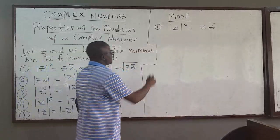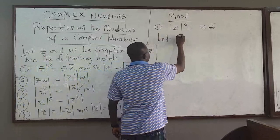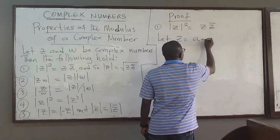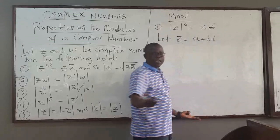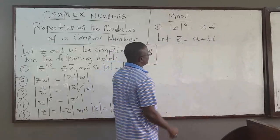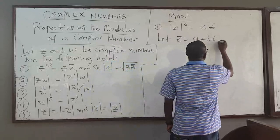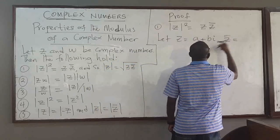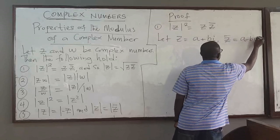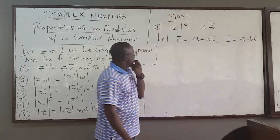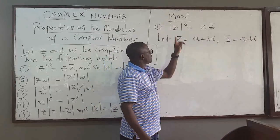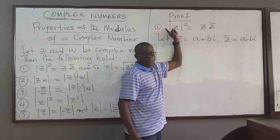What we want to do is let our complex number Z equal to A plus Bi. You can use X and Y or whatever. If that is Z, then the conjugate is easy — it will be A minus Bi. Now, I want to show that the product of Z and Z-conjugate equals |Z|².